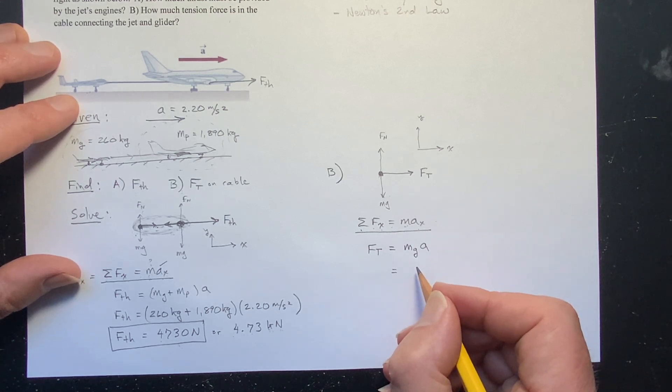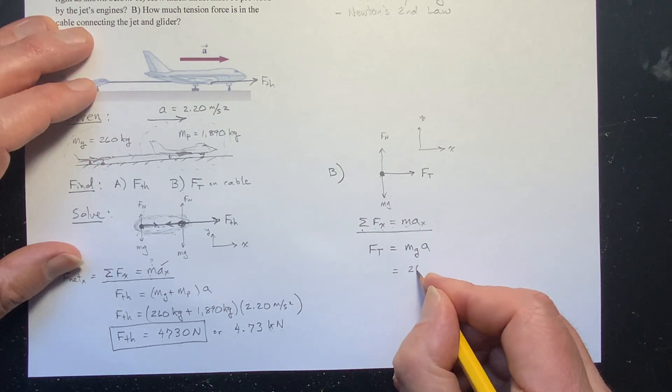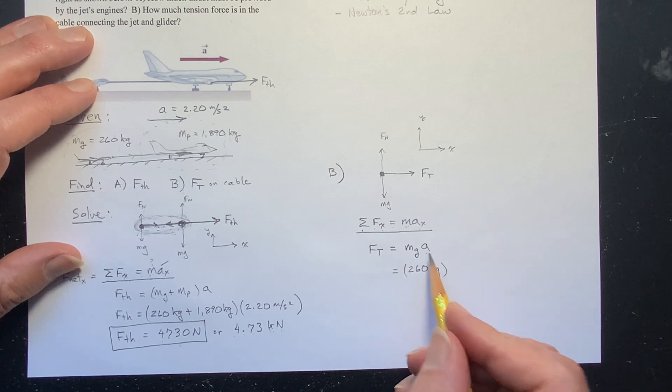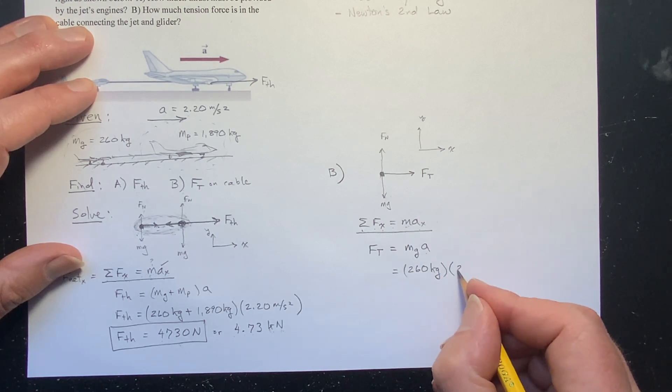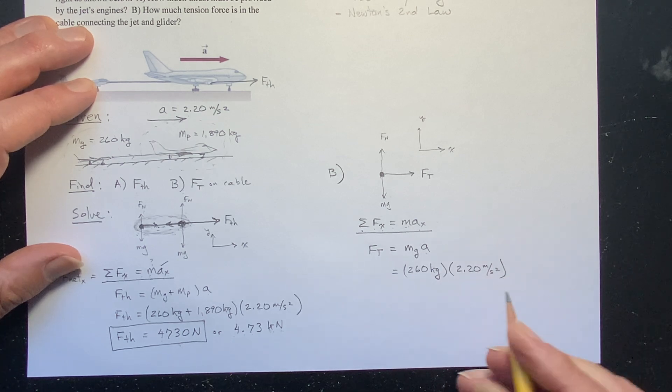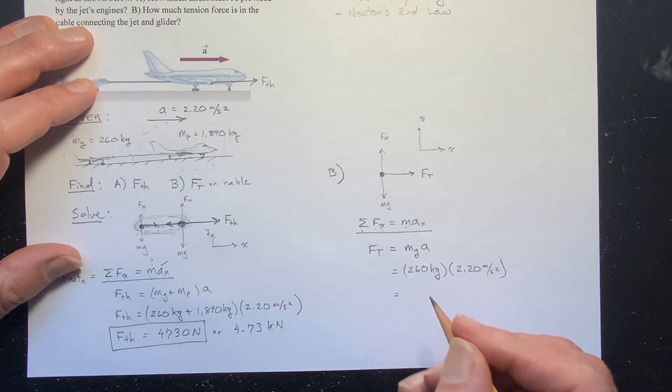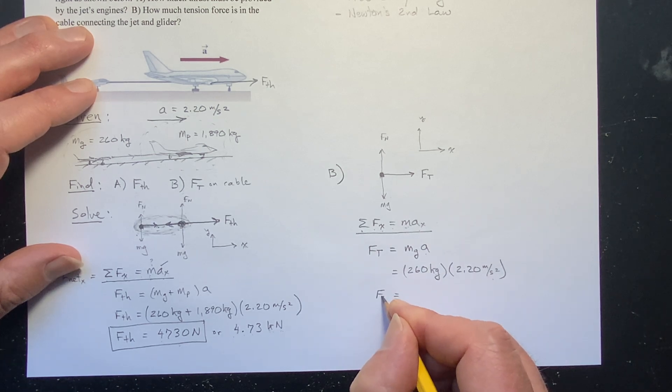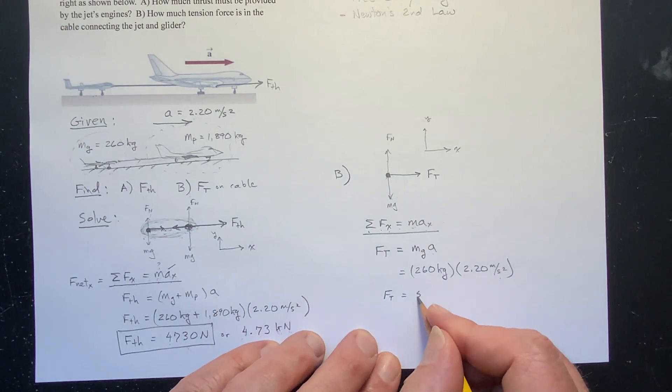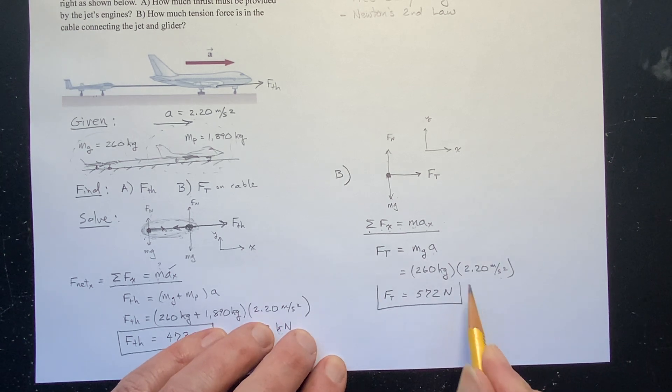Well, I look in the x direction, there's only one force. That's the tension force equals now the mass. What is the mass of? The mass of my free body, which is, in this case, just the glider. So, that's going to be the mass of the glider times the acceleration. And now I can plug my values in. The mass of the glider was given to be 260 kilograms. And the acceleration was given to be 2.20 meters per second squared. And, of course, a kilogram meter per second squared is a newton. So, my units are good. So, that tension force will be equal to, when I do the arithmetic, 572 newtons. And there's my answer.